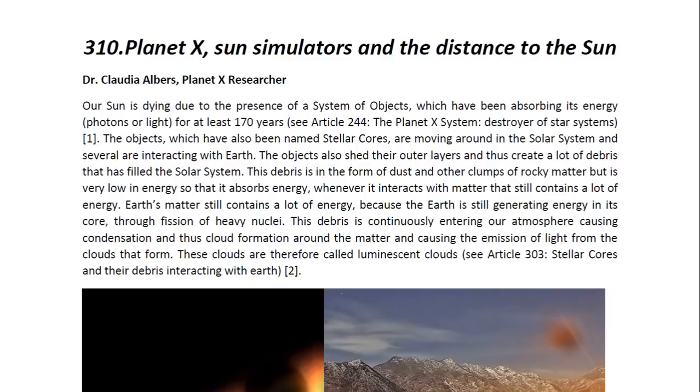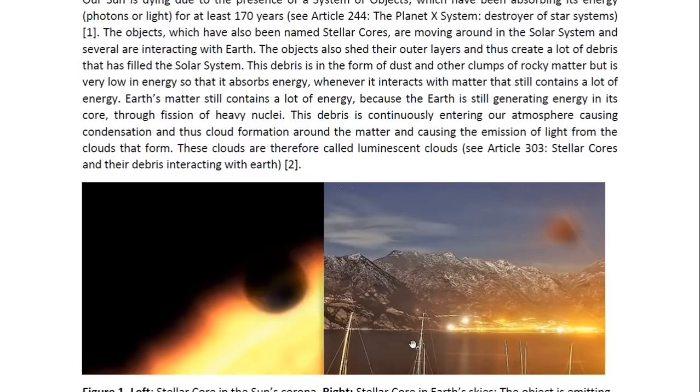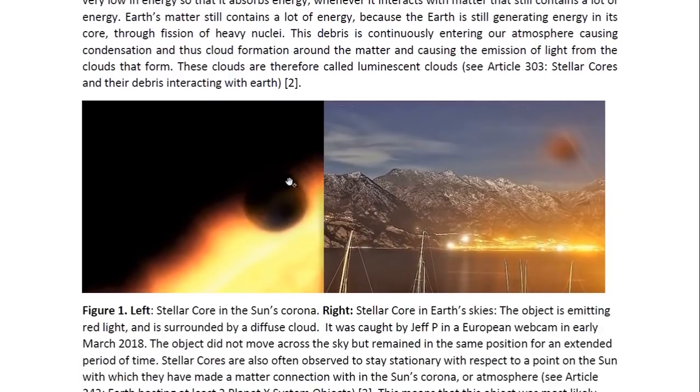This debris is continuously entering our atmosphere, causing condensation and thus cloud formation around the matter and causing the emission of light from the clouds that form. These clouds are therefore called luminescent clouds. And you may look at Article 303 entitled Stellar Cores and Their Debris Interacting with Earth. And here we see some of these stellar cores. This one is in the sun's corona. And as you can see, it looks like a dark spherical object within the sun's corona. This one is most likely actually in the Earth's atmosphere because it was observed to be stationary in the Earth's sky. And they are often observed to remain stationary with respect to the surface of the sun within the sun's corona because they make a connection with the sun and thus rotate with it. This one seemed to be doing the same thing with Earth. So it was most likely actually within the atmosphere of Earth.